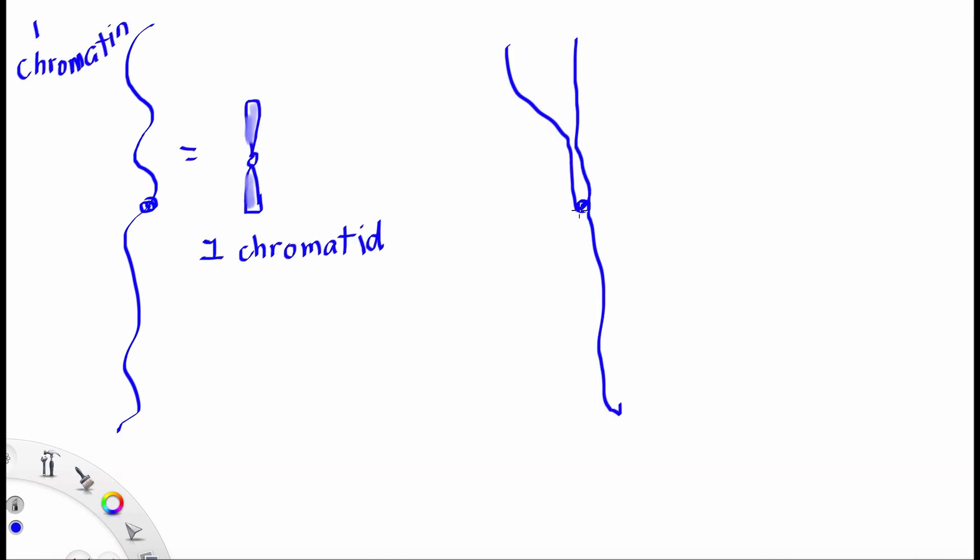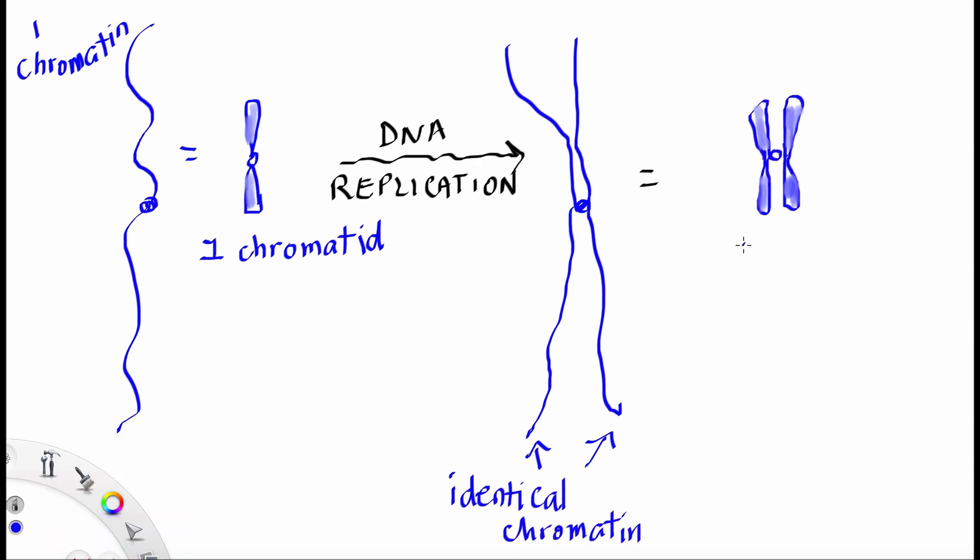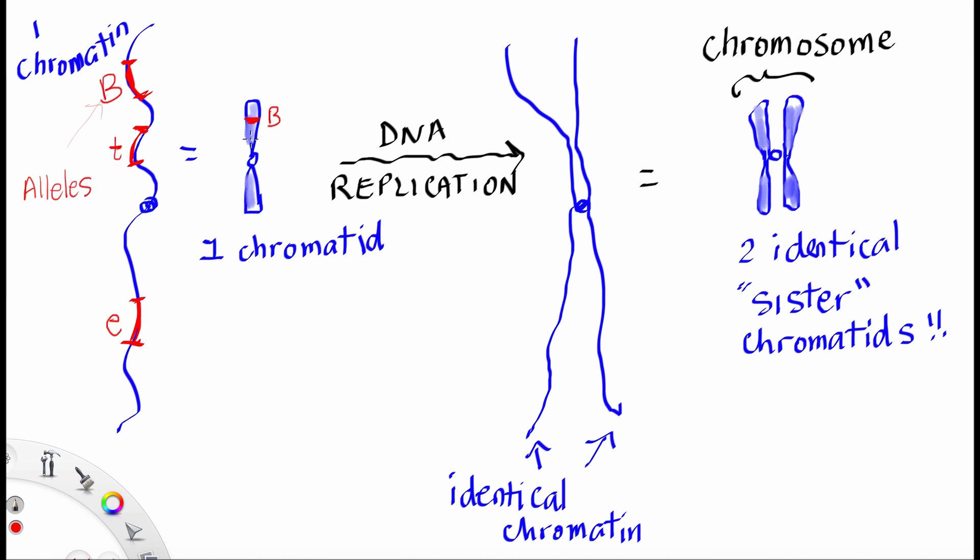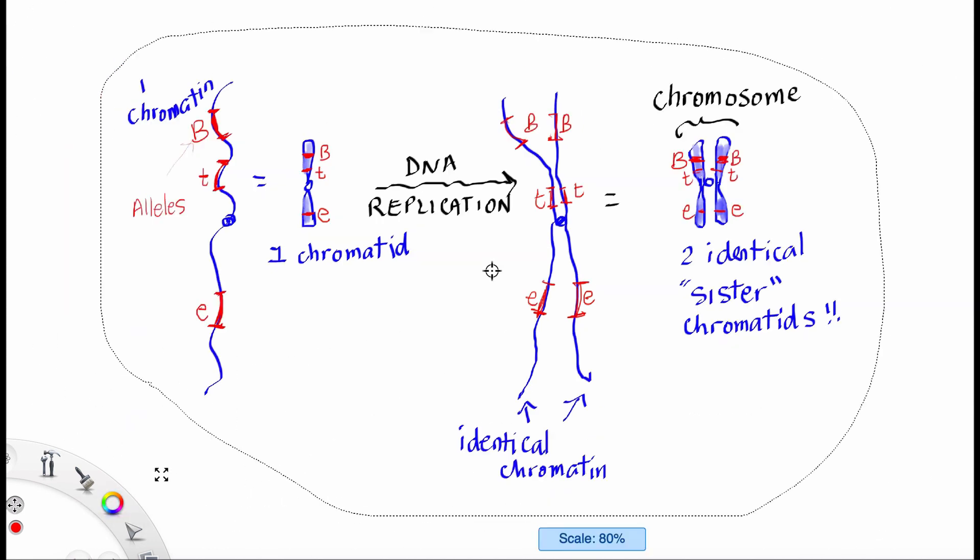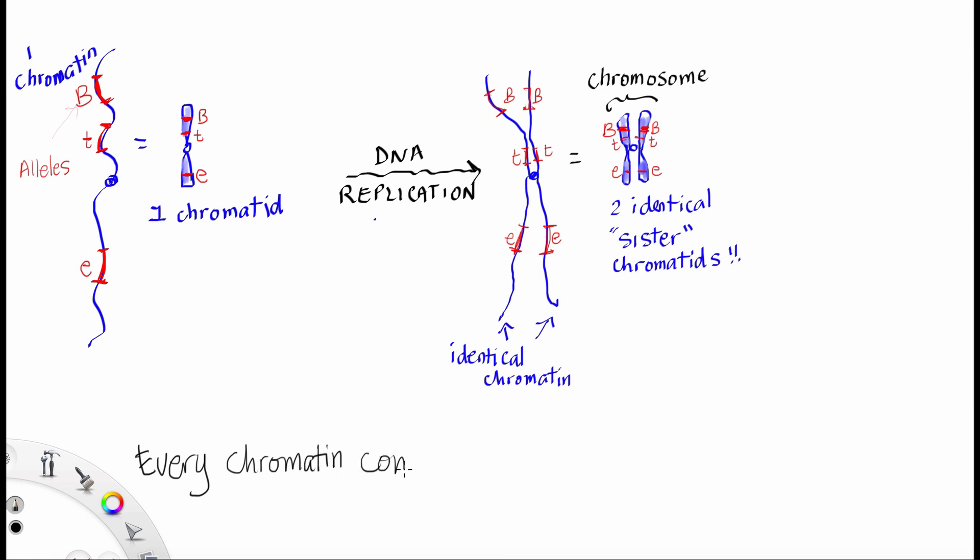Now some terms. It's very important to know the difference between chromatin and chromatid. After DNA replication, you can actually get an identical copy of the chromatin and an identical copy of the chromatid. The identical copies are called sisters, sister chromatids. Now the two sister chromatids attached together are called chromosome.